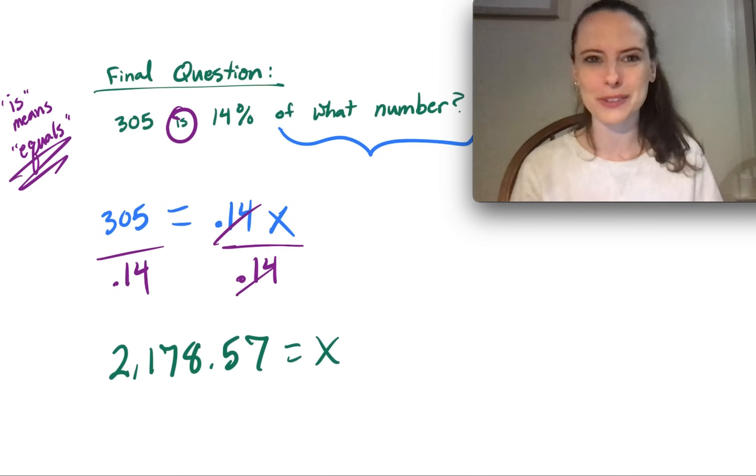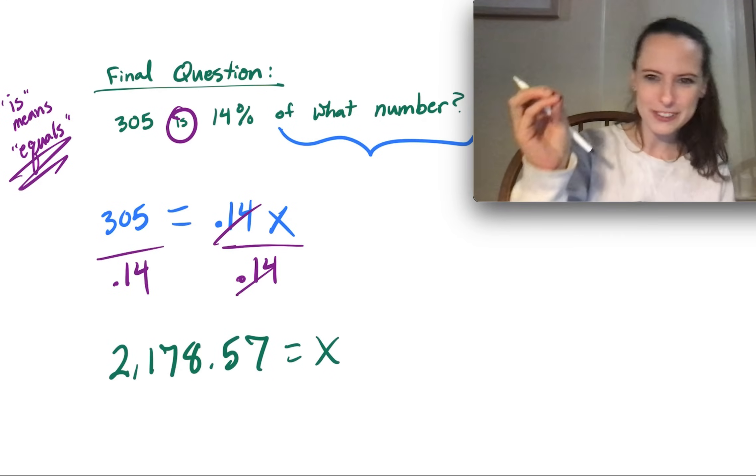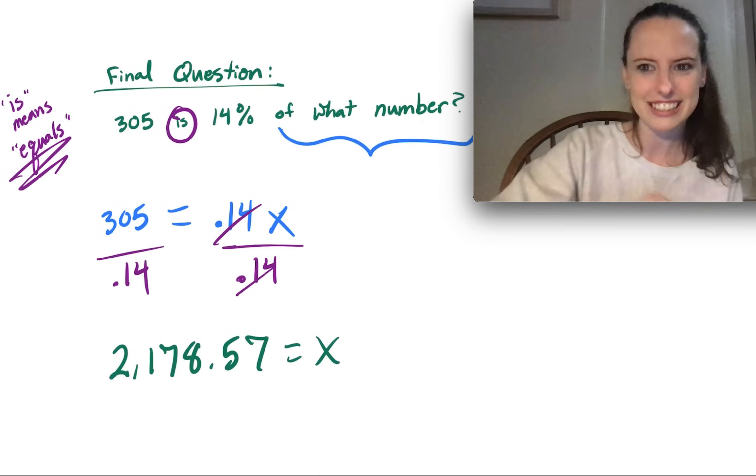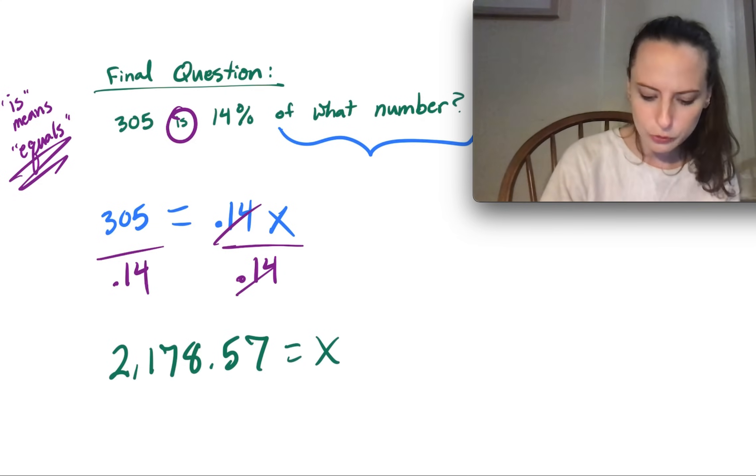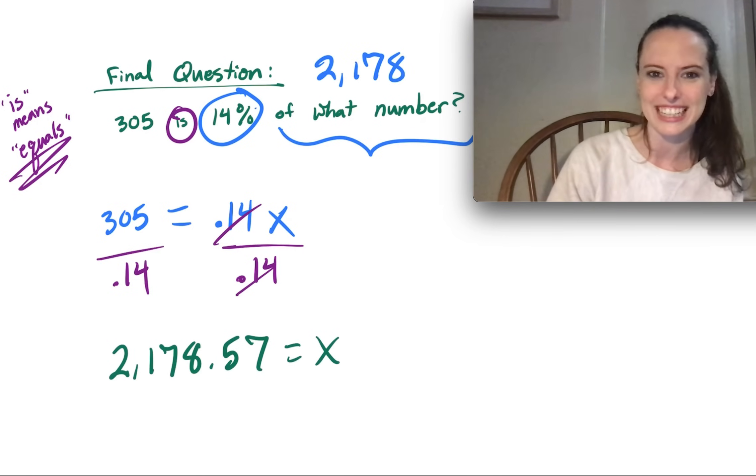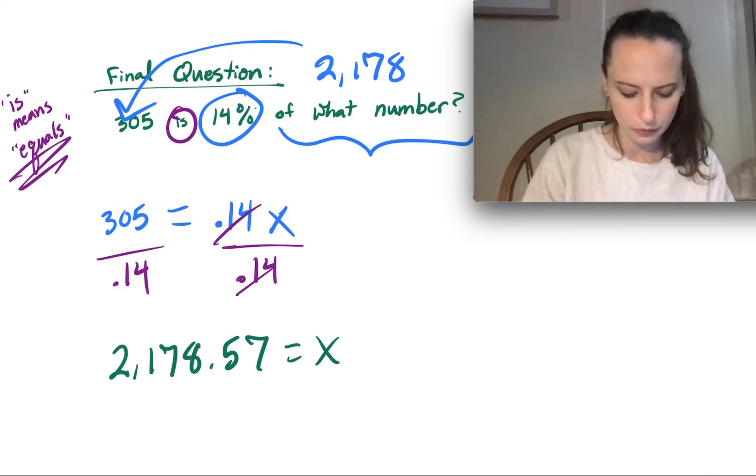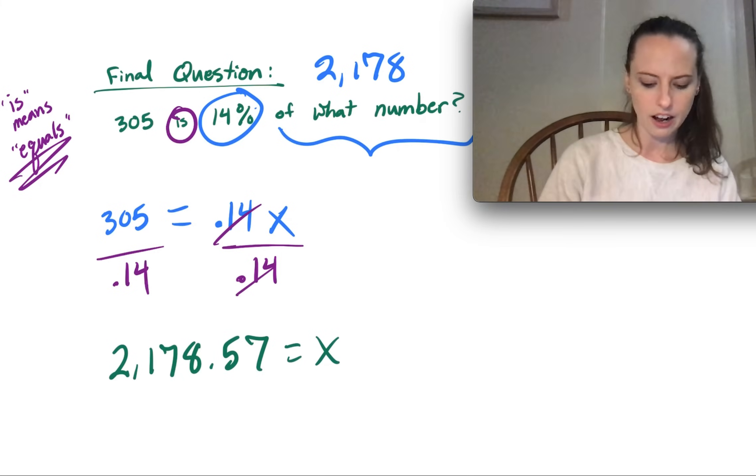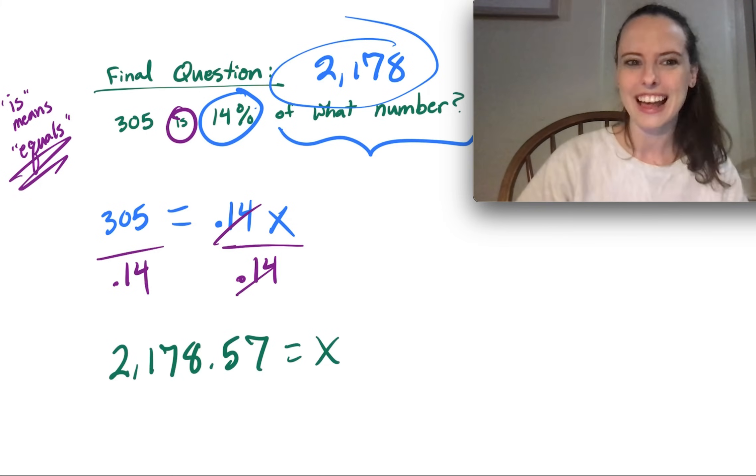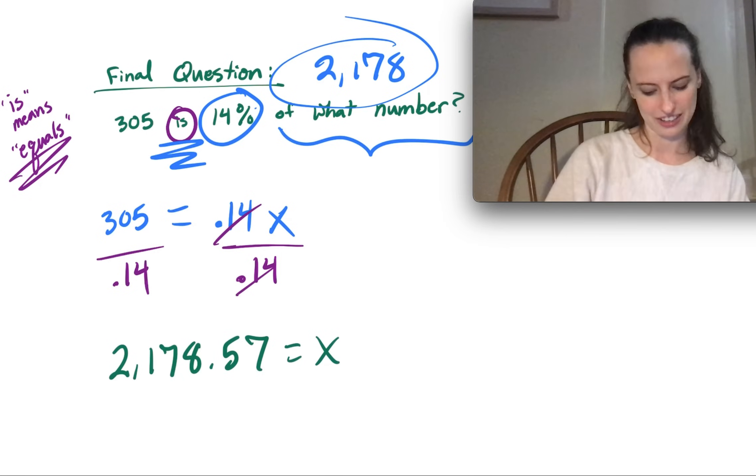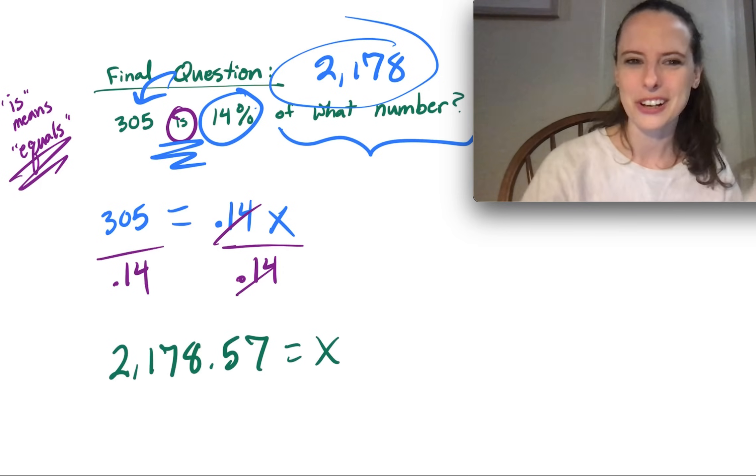Now, maybe you were expecting the number to go down thinking, 14% of 305, it's going to be small. But remember, this is really 14% of 2,178 that equals 305. So that's a good way to check and make sure that you've plugged everything in in the right spots is thinking about, okay, we're looking for 14% of this really big number, and that has to equal 305. So keep on practicing those percents, and you'll be a pro in no time.